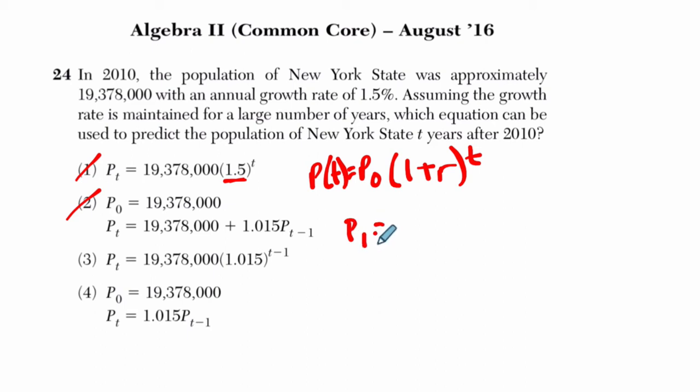Because let's say I plug in, let's say I want to find P of 1, P of 1. What would I do? Now, in this case, T is the number of years after 2010. So it's one year after 2010, so it's 2011. What would happen?